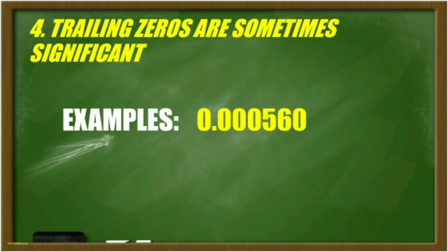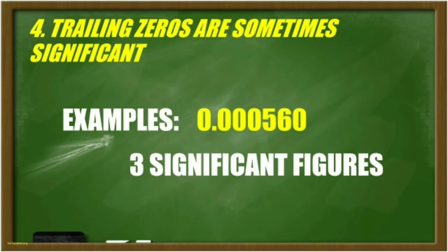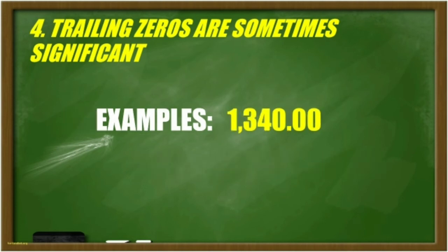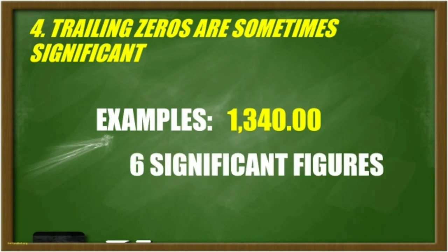Another example: in 0.000560, there are 3 significant figures. The 4 leading zeros are not significant based on rule number 3. But the 0 after 6 is significant, since it is written after the decimal point after a non-zero digit, which is 6. Another example: in 1340.00, there are 6 significant figures. The 3 trailing zeros after digit 4 are counted because of the decimal point.